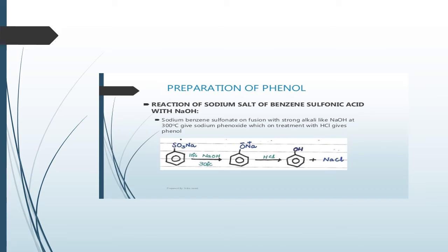Another example: sodium benzene sulfonic acid, which you studied in the benzene ring sulfonation (electrophilic substitution reaction), is also reacted with sodium hydroxide to form sodium phenoxide. This sodium phenoxide is then further reacted with acid to easily convert it into phenol. So any substituted benzene — chlorobenzene or benzene sulfonic acid — reacts with NaOH to give sodium phenoxide, which gives phenol upon acidification.